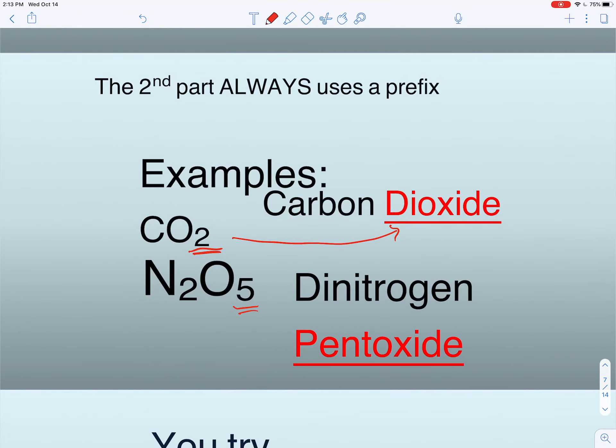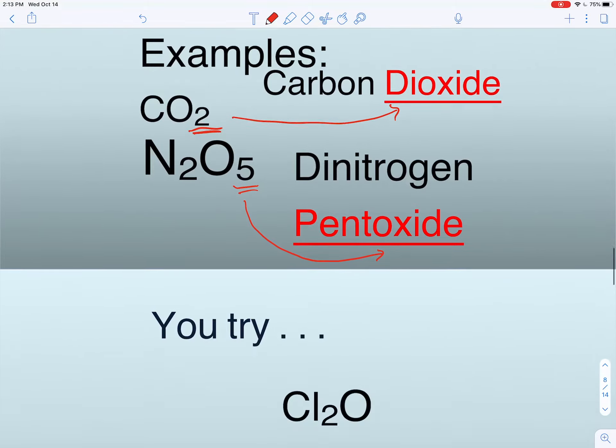N2O5, because there are five oxygens here, we're going to use pentoxide. So prefix for five is pent. This is dinitrogen pentoxide when you put it all together.